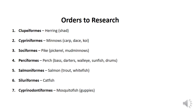There are several orders of freshwater species: Clupeiformes include herrings; Cypriniformes include minnows, carp, dace, and koi; Esociformes include pike, pickerels, and mud minnows; Perciformes include perches, bass, darters, walleye, sunfishes, and drums; Salmoniformes include salmon, trout, and whitefishes; Siluriformes include catfishes; and Cyprinodontiformes include mosquitofish and guppies.